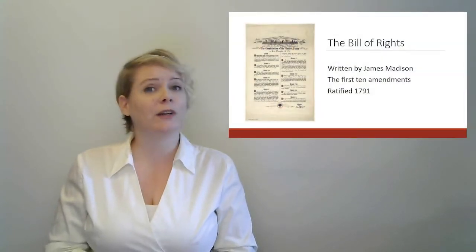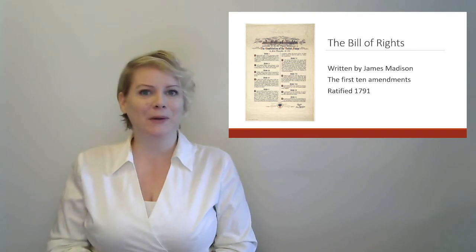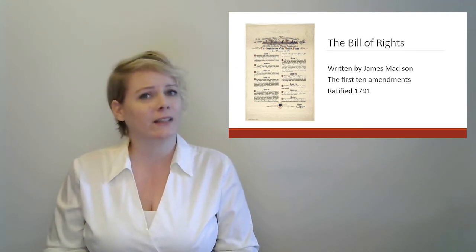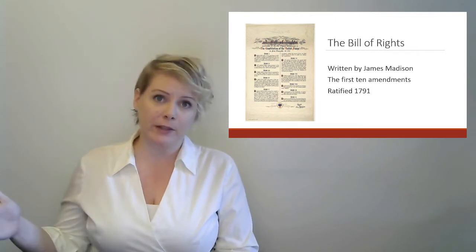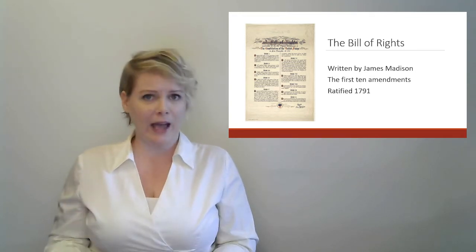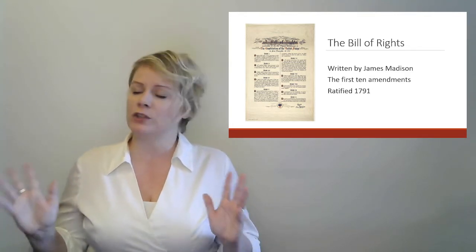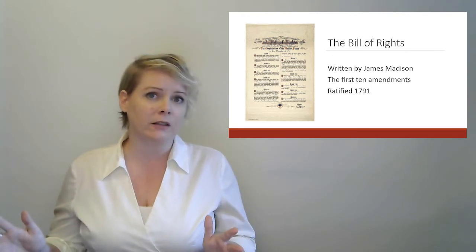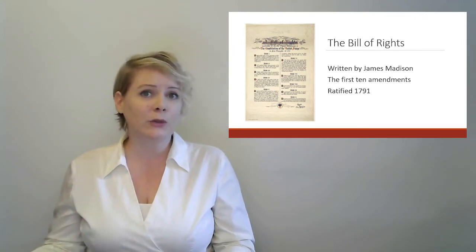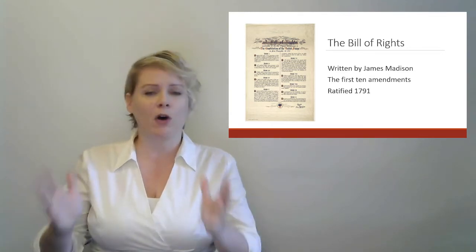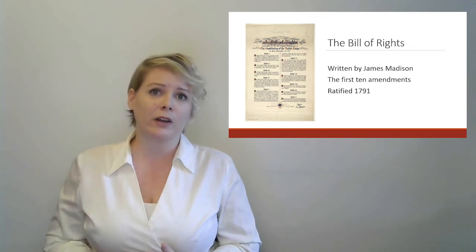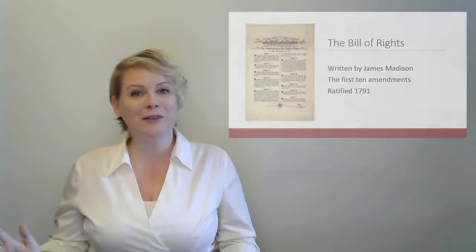Almost immediately after finishing the Constitution, they realized they had left a bunch of stuff out. They went home and ratified it across the different states, but sent James Madison home to do all the work — because somebody always does all the work. He wrote the first ten amendments, collectively called the Bill of Rights. The Bill of Rights is basically all of the stuff they kind of wanted in the final document but hadn't done yet. The Constitution itself is just a scaffold — the bare bones to get a government and country up and running. The Bill of Rights goes on top of that. It was all written and ratified in one big lump in 1791.